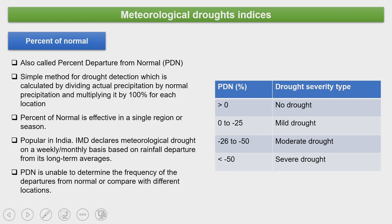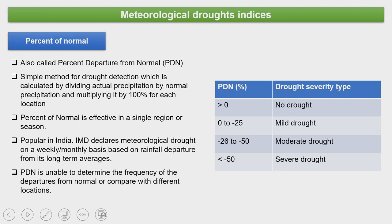A simple method for drought detection involves dividing actual precipitation by normal precipitation and multiplying by 100 — giving you the percentage of water coming into the system. The percent of rainfall in certain areas over time also changes. Having that data helps plan a very effective and robust adaptation strategy. One way to evaluate drought intensity is the percent departure from normal.